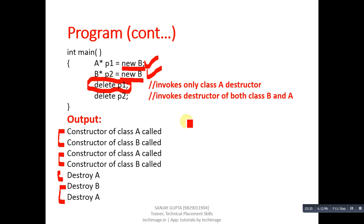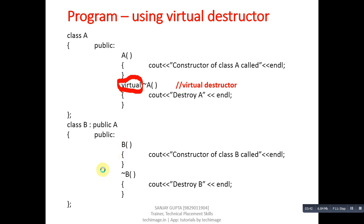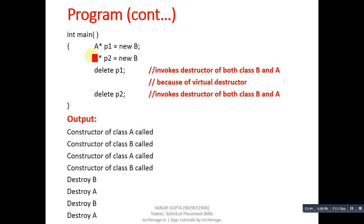To resolve this problem, we implement the program using a virtual destructor. The previous program is modified with the virtual keyword — the base class destructor is declared as virtual. The rest of both class definitions remain the same, and the main function is also the same. p1 is a base class pointer pointing to a derived class object; p2 is a derived class pointer also pointing to a derived class object.